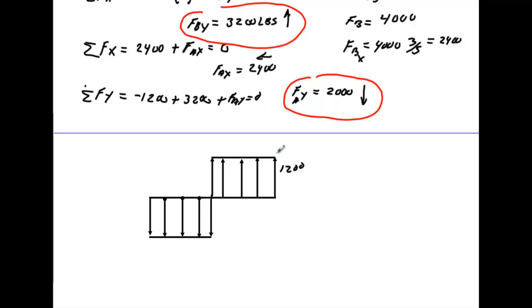Okay, so this is 1,200 here all the way along. We come down 3,200, so this becomes negative 2,000. And that is your shear diagram.